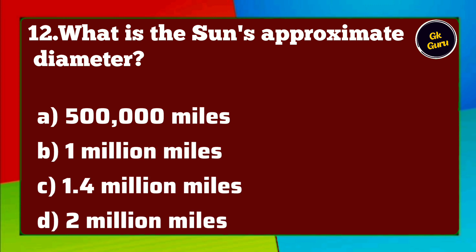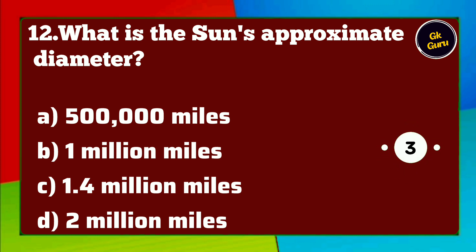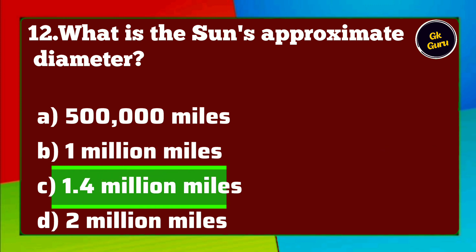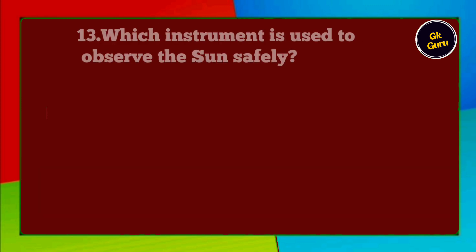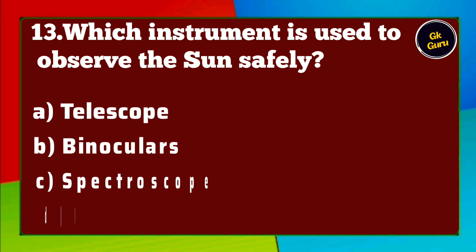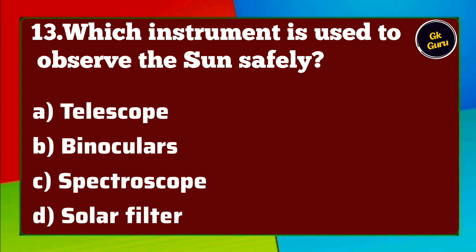What is the sun's approximate diameter? A. 500,000 miles B. 1 million miles C. 1.4 million miles D. 2 million miles. Answer C. 1.4 million miles.